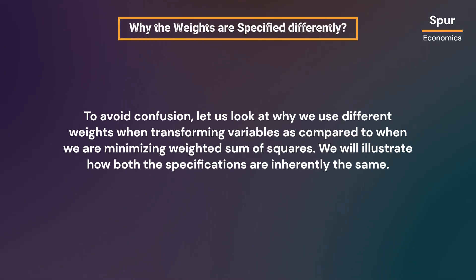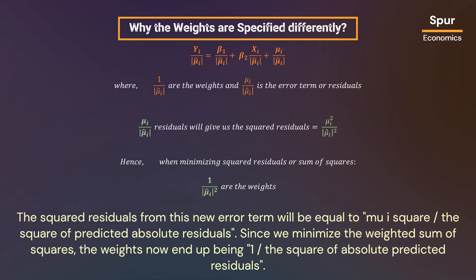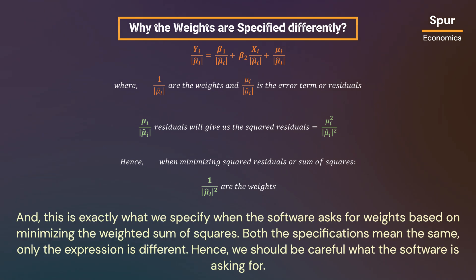To avoid confusion, let us look at why we use different weights when transforming variables compared to when minimizing the weighted sum of squares. When we transform all the variables in the model before estimation using 1 divided by predicted absolute residuals, the transformed model shows all variables, parameters, and the error term divided by these weights. The squared residuals from this new error term equal mu-i squared divided by the square of predicted absolute residuals. Since we minimize the weighted sum of squares, the weights end up being 1 divided by the square of predicted absolute residuals — exactly what we specify when the software asks for weights based on minimizing the weighted sum of squares. Both specifications mean the same; only the expression is different, so we should be careful what the software is asking for.